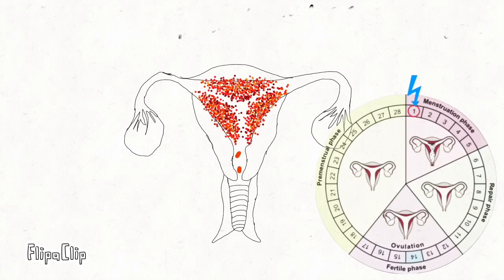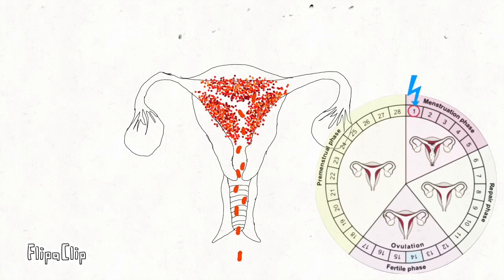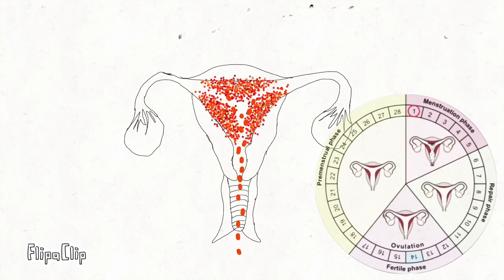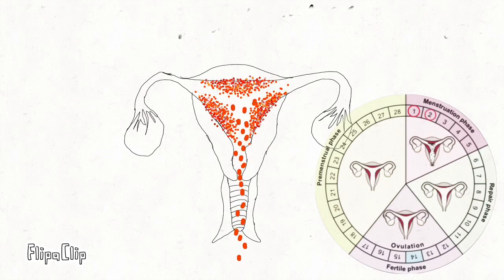The start of this phase marks the first day of the menstrual cycle. On average, women will have their menstruation for a range of 5 to 6 days.